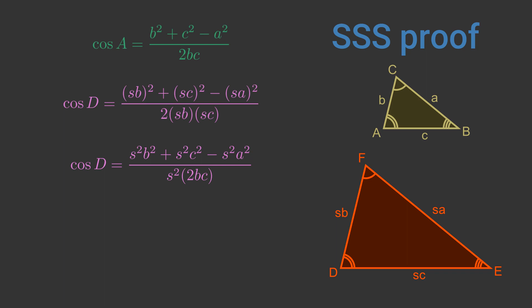Then we can separate out the terms in S. Every term, top and bottom, has a factor of S squared, so let's cancel these out. This is the same equation we had for cosine A, so cosine D equals cosine A. This means that angle D equals angle A.